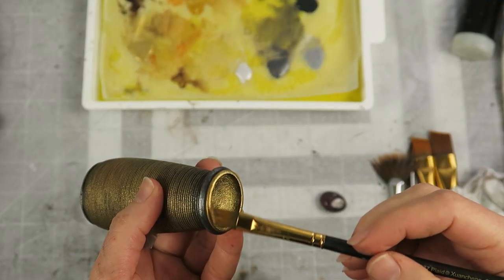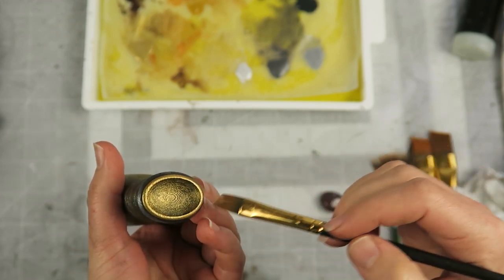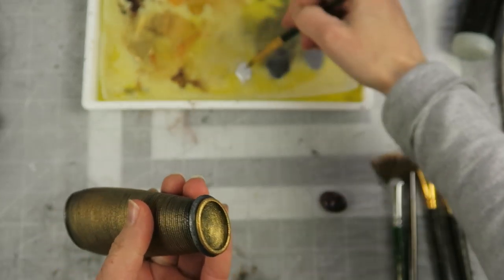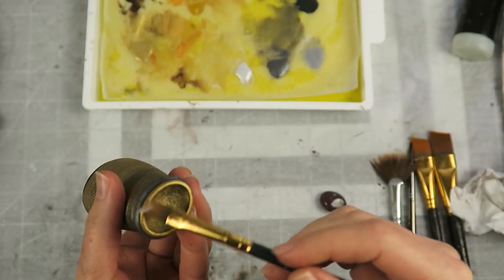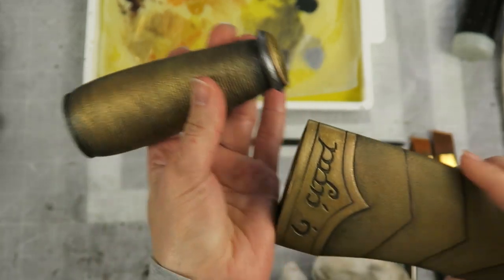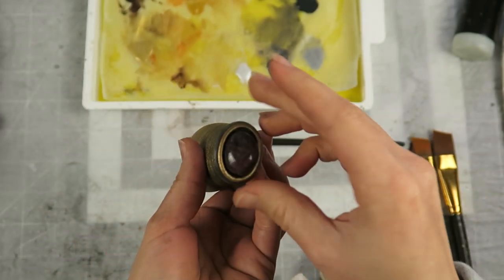On the hilt, I decided last minute that that bottom ring where the ruby will be installed, that it needed to be gold. It didn't look quite right silver and the ruby will stand out more against the gold, so I added the same gold process to this end ring with a base coat of plain gold, some warm highlights, and then a bit of that silver just for the brightest spots.